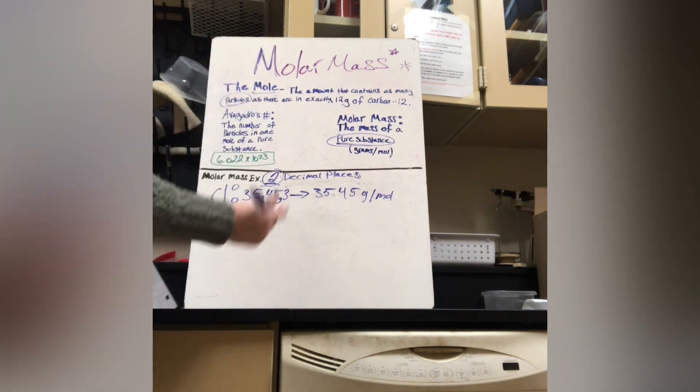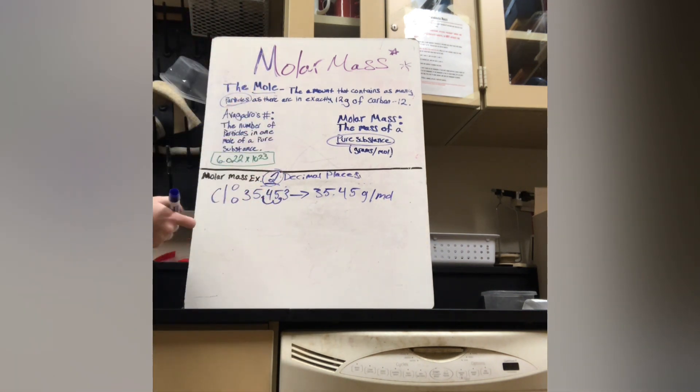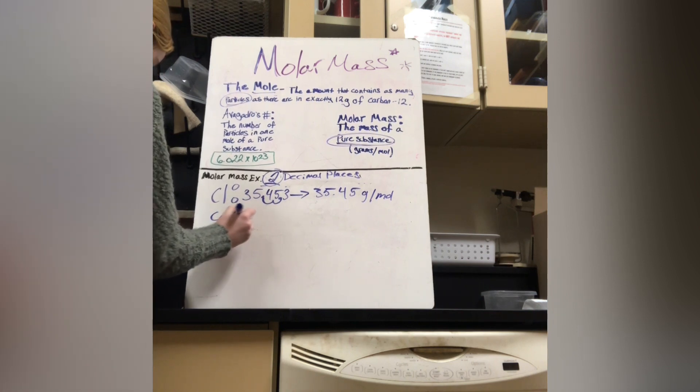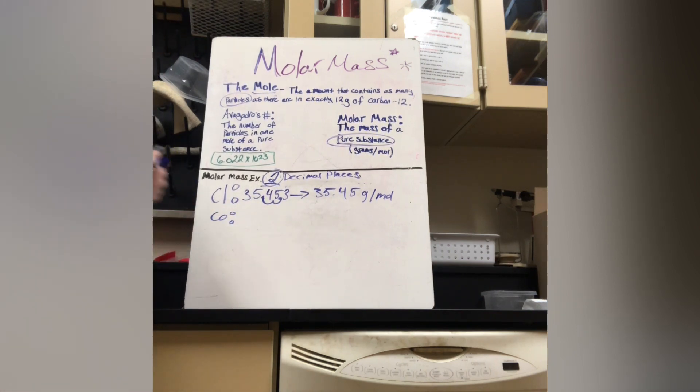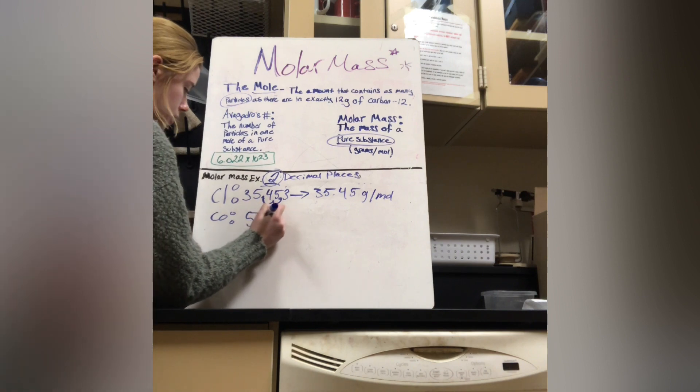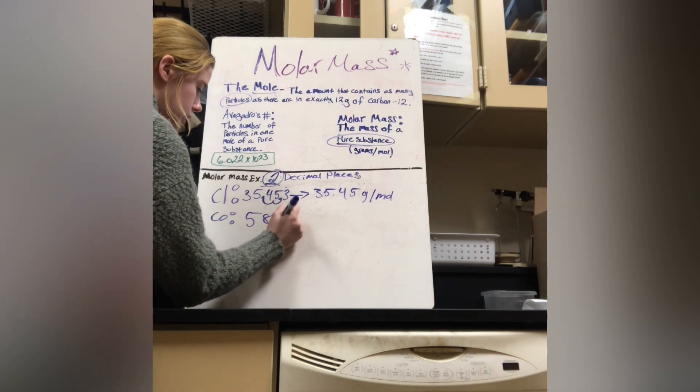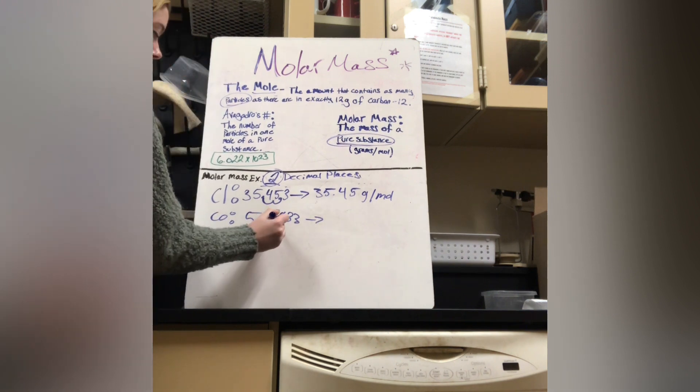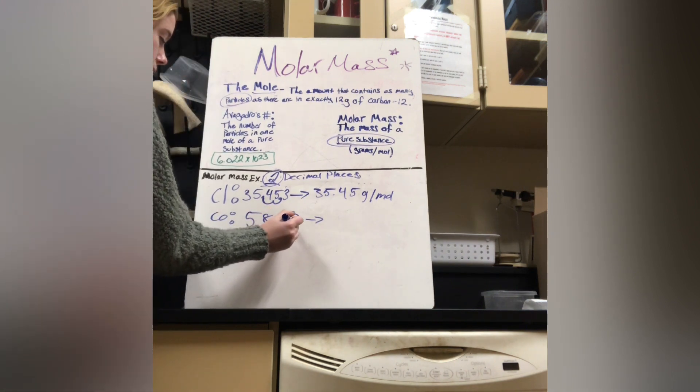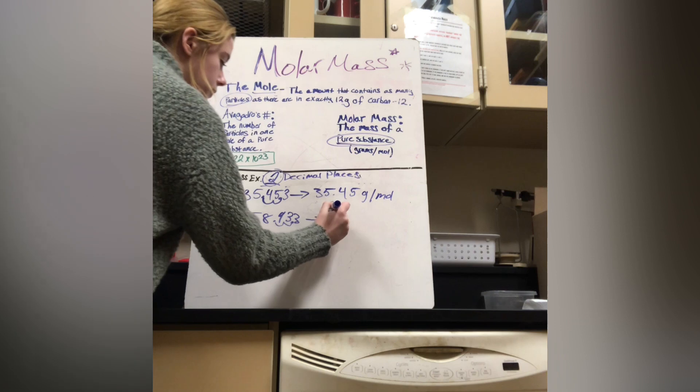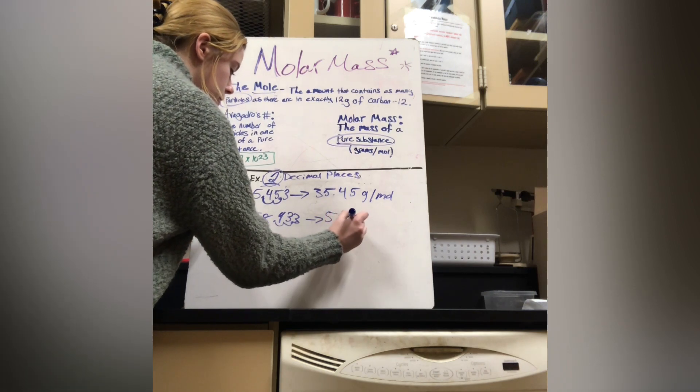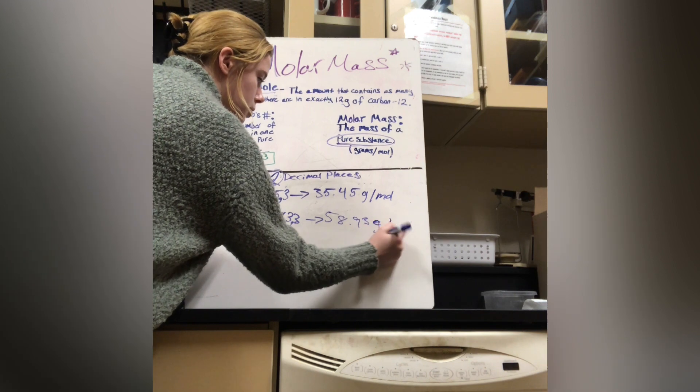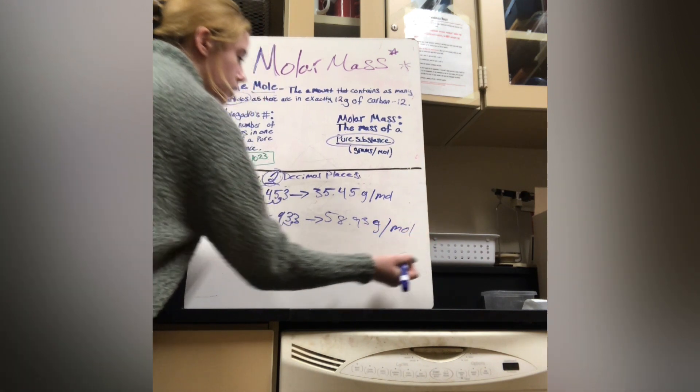Another example would be cobalt, which is 58.933. Now, again, we would carry the decimal two places. So it would be 58.93 grams per mole. So we would carry the decimal, okay?